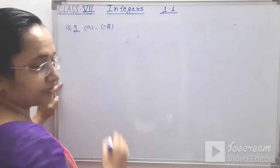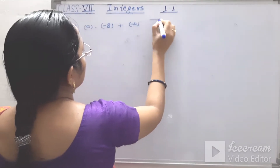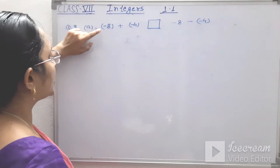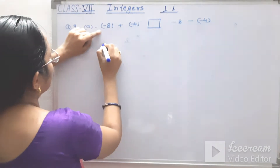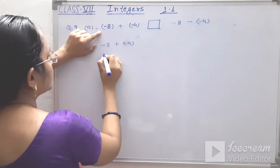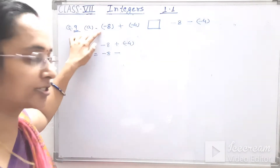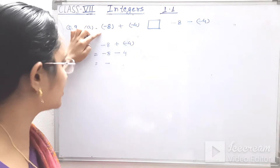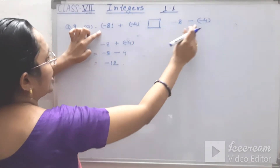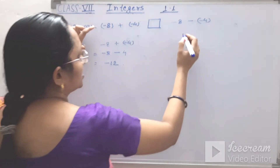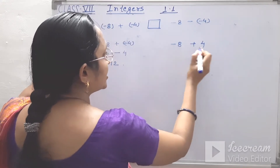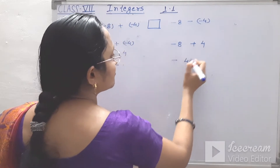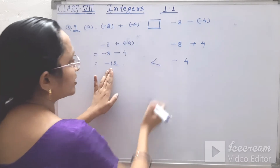First: minus 8 plus minus 4 compared to minus 8 minus minus 4. Left side: minus 8 plus minus 4 equals minus 12. Right side: minus 8 minus minus 4 equals minus 8 plus 4 equals minus 4. Minus 4 is greater than minus 12, so the sign is less than.